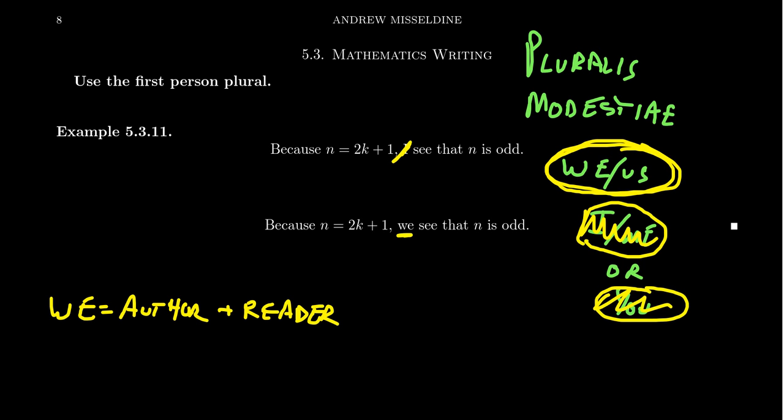And so by all means, this idea of pluralis modestiae, I think I just mispronounced that, oh well. By the plural modesty here, we do this journey together and actually makes mathematical writing much more inclusive than any other method if I use different schemes to describe pronouns here.